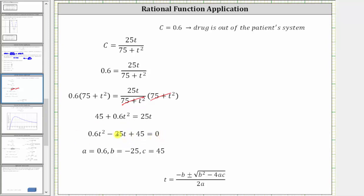This is not factorable and therefore we'll have to use the quadratic formula where instead of X here, we have T, where A is equal to 0.6, B is negative 25, and C is 45.